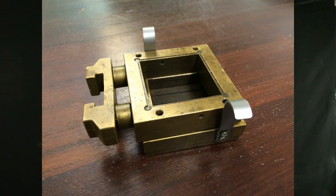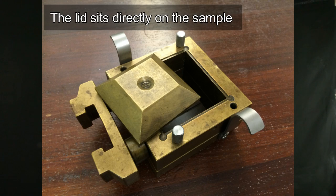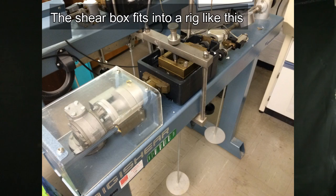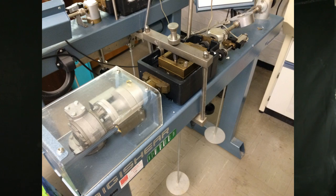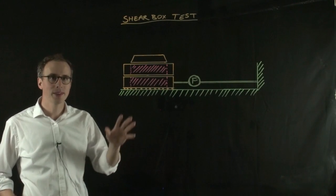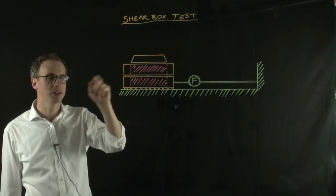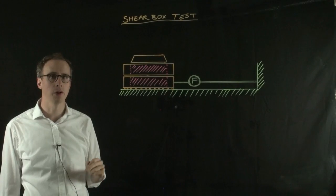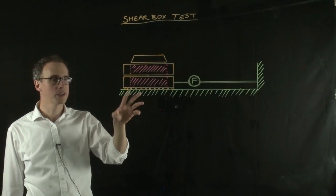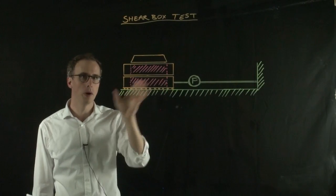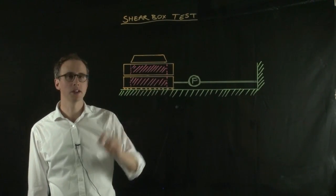A shear box looks like this. You can see that there are two confining rings and a space for your sample to sit in the middle. A lid goes on top where you can suspend a known normal stress onto your sample. The shear force is created when the two halves of the shear box move away from each other. We have two halves of the shear box, the sample sits in the middle, and on top we have a lid. The shear box sits in a rig that fixes the bottom half through a force transducer, so that bottom half stays fixed, but we can measure the force going through it.